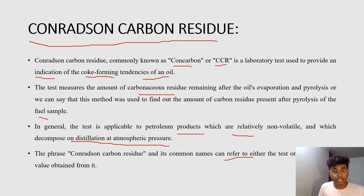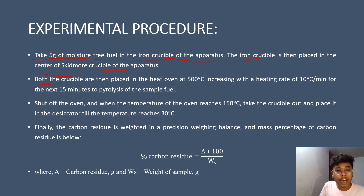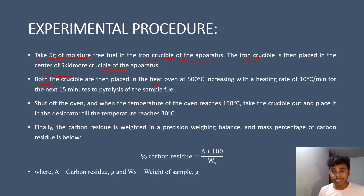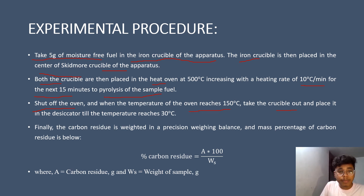For the experimental procedure: first, take 5 grams of moisture-free fuel in the iron crucible of the apparatus. Then place the iron crucible inside the center of the Skidmore crucible of the apparatus. Both crucibles are then placed in a heat oven initially at 500°C, and the temperature is increased by 10°C per minute for the next 15 minutes, during which pyrolysis of the sample is performed. After 15 minutes, shut off the oven, and when the temperature reaches 150°C, take the crucible out and place it in a desiccator to cool until the temperature reaches 30°C.